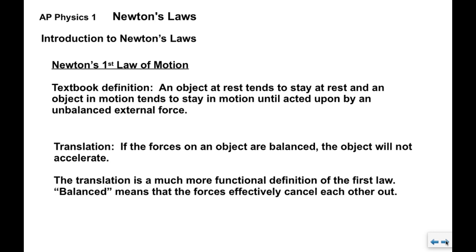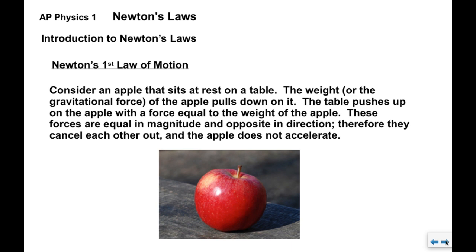Balanced means that the forces effectively cancel each other out. If we have some forces to the right, we have some other forces to the left that cancel them out. If we consider an apple that sits at rest on a table, the weight or the gravitational force of the apple pulls down on it and the table pushes up. The table pushes up on the apple with a force that's equal to the weight of the apple. These forces are equal in magnitude and opposite in direction, so they cancel each other out. Therefore, the apple does not accelerate.